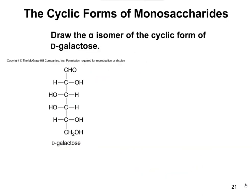Let's take this structure, which is D-galactose, and draw it. You can go through the whole process of rotating it 90 degrees clockwise and twisting it around, or you can use the shortcut. Draw a six-membered ring with an O in the upper right-hand corner. Doing that, we can go through our carbons: carbon 1, carbon 2, carbon 3, carbon 4, carbon 5. Carbon 6 goes up from carbon 5 and will be our CH2OH.